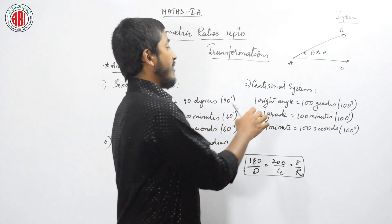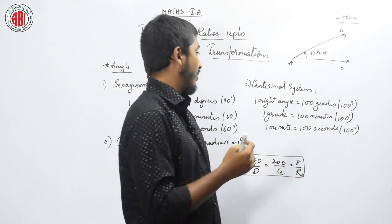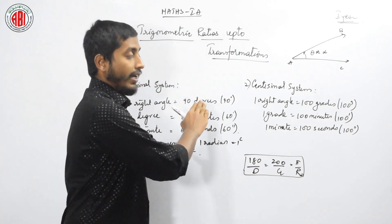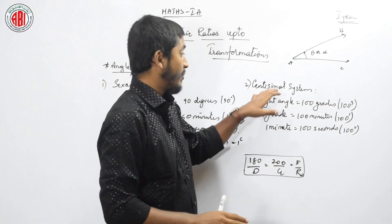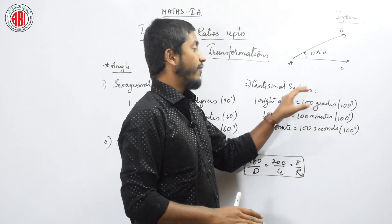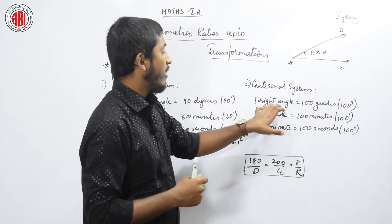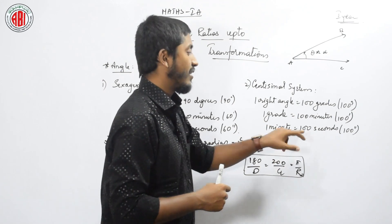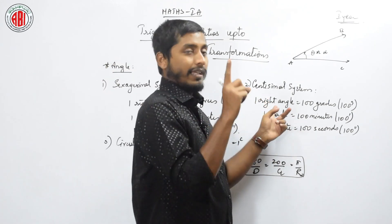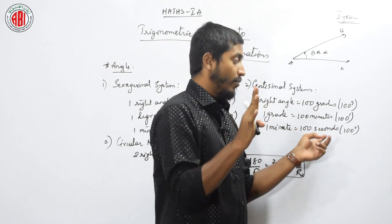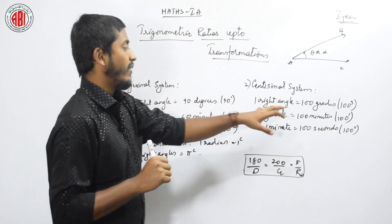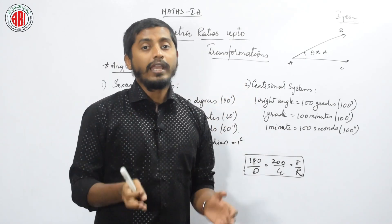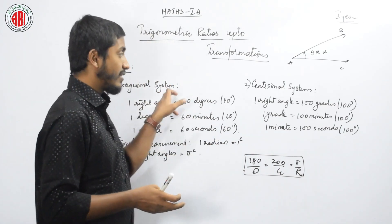Next is the centesimal system. In the centesimal system, one right angle is equal to 100 grades. Here they have classified this into grades instead of degrees. This centesimal system is actually given by French people; it is popularly called the French system of angle. One right angle is 100 grades, one grade is 100 minutes, and one minute is 100 seconds. So we again have four terms: right angle, grade, minutes, and seconds. The only difference between the sexagesimal and centesimal system is that instead of degrees we have grades.